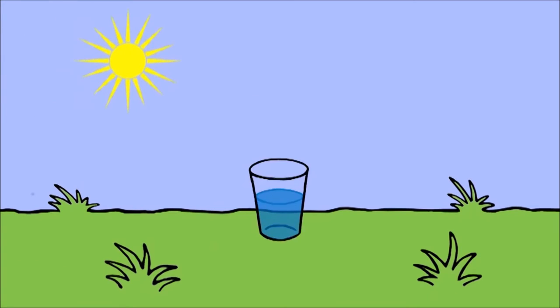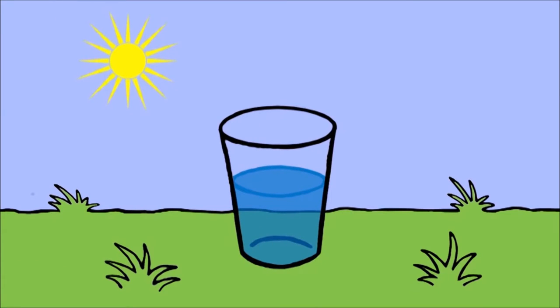You can see this effect for yourself. Take a cold glass of water and place it outside. Water vapor will condense on the outside of the glass. The water does not leak through. It came from the warm air and has condensed on the outside of the cold glass.